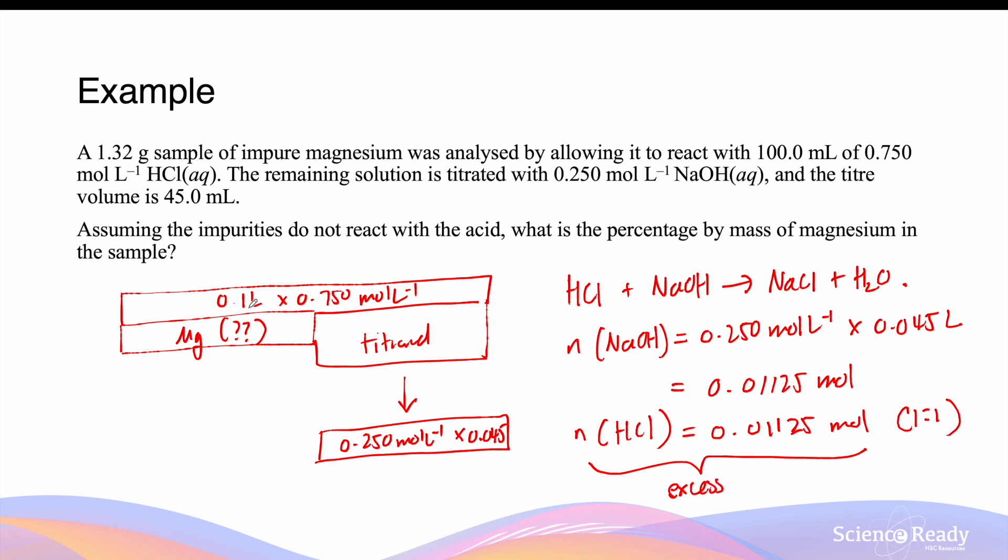How do we determine the original amount that reacted with magnesium? Well, we need to take the initial amount that we added, which is 0.1 times 0.75, which gives us 0.075 moles. That means the amount of HCl that reacted is equal to the initial amount minus the amount of titrant, which is the amount left over. This gives me 0.06375 moles.